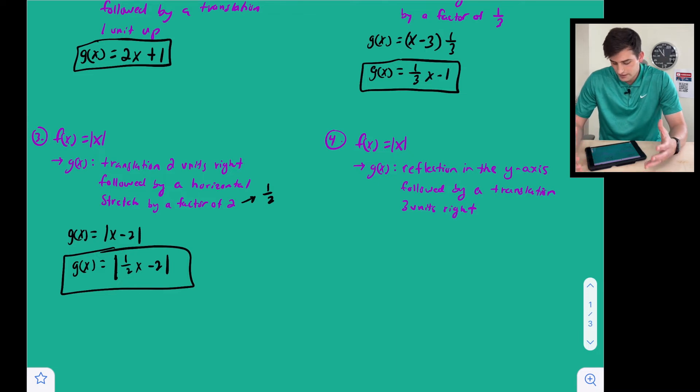All right, for number four, we're going to reflect in the y-axis and then translate three units to the right. So we're working with absolute value here, so we're going to say g of x equals, and anytime we reflect on the y-axis, we need to make x opposite. So if I write it like this, absolute value of negative x.